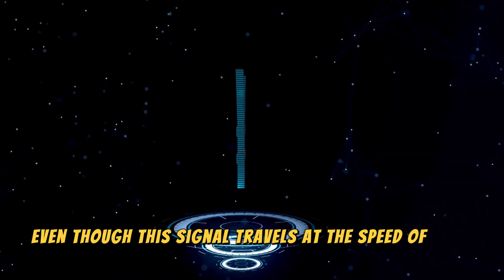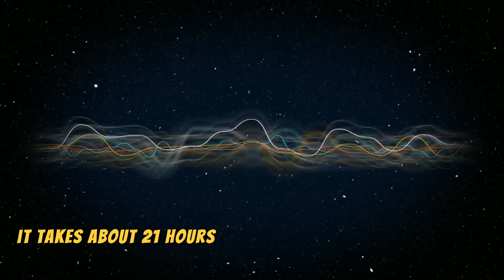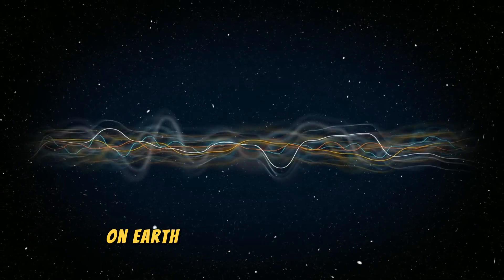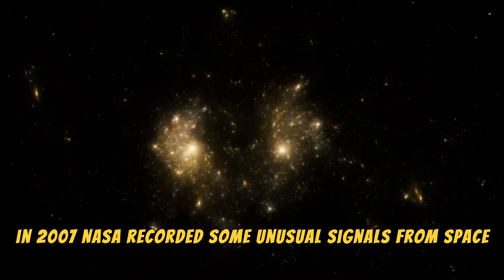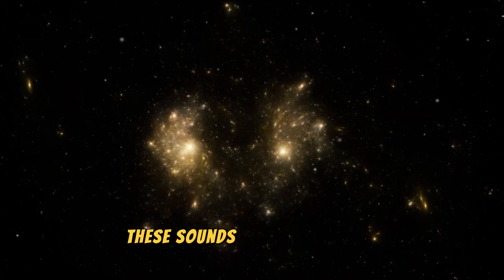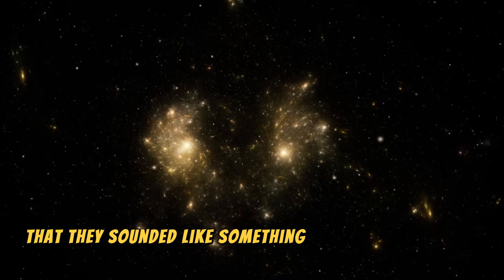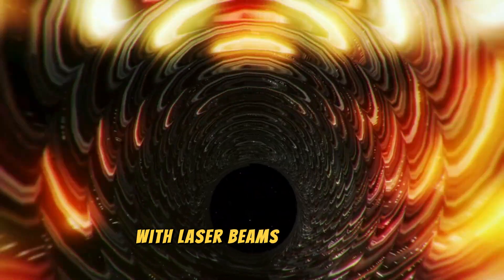Even though this signal travels at the speed of light, it takes about 21 hours for it to reach NASA's antennas on Earth. This wasn't the first time Voyager 1 sent back strange sounds. In 2007, NASA recorded some unusual signals from space that were far from normal. These sounds were so strange that they sounded like something attacking Voyager 1 with laser beams.